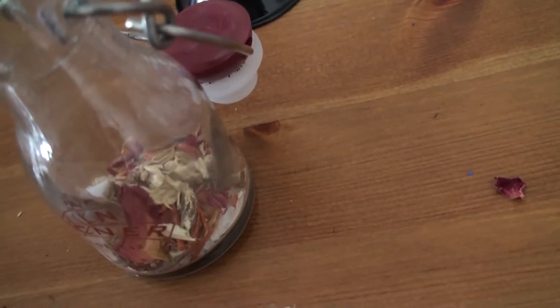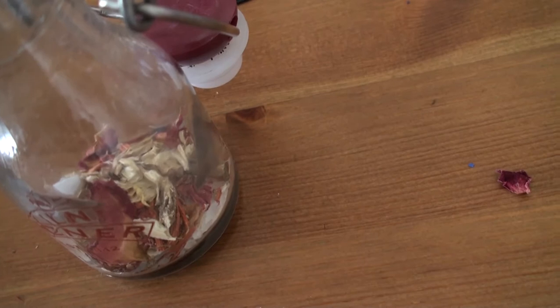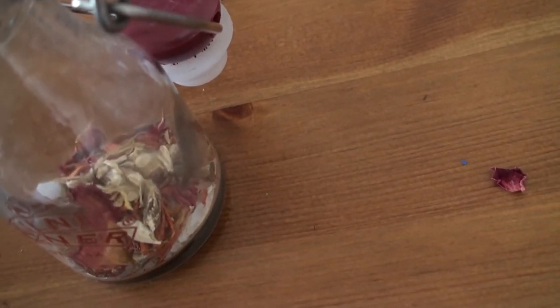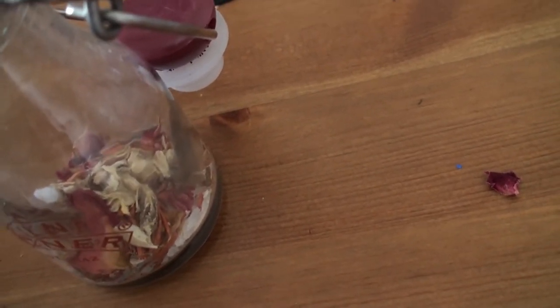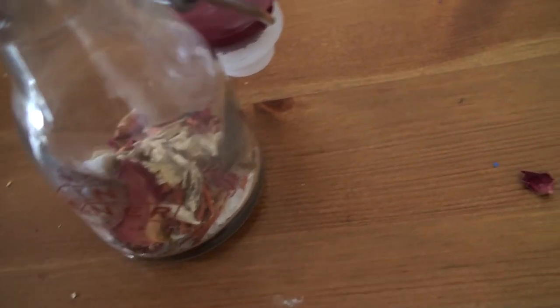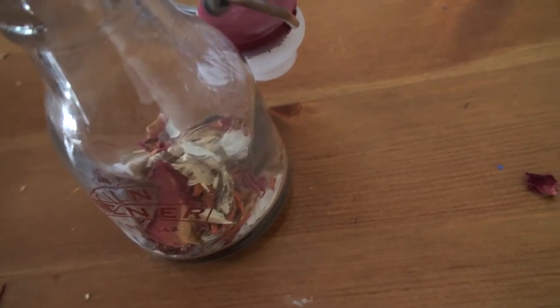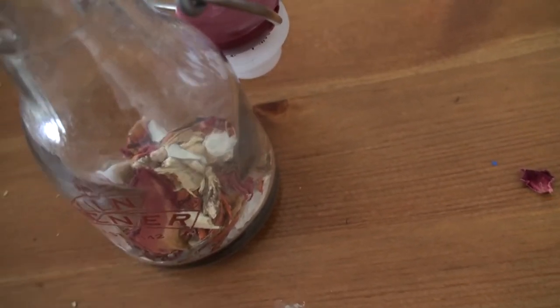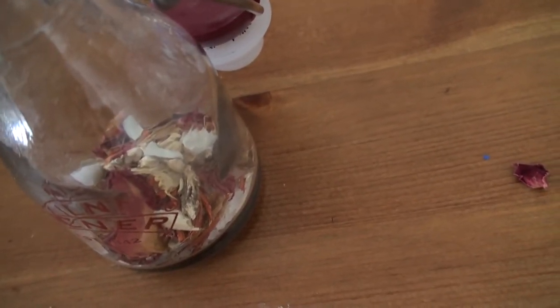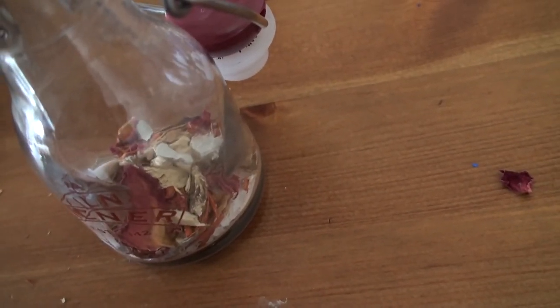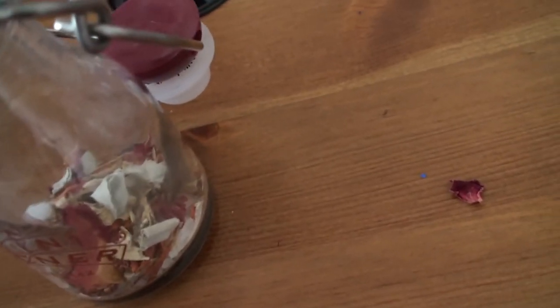And then I'm going to put some sage in. I've only got white sage because the cooking sage will get used. One leaf crunched up, two leaves crunched up.